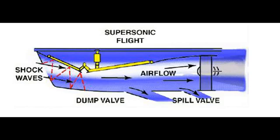The Concorde inlets shown in the figure provide a good illustration of how complicated an inlet may have to be to take full advantage of energy recovery. At the speed of sound, half the pressure needed by the engine for combustion may be provided by ram effect and the other half by compression through the engine. At twice the speed of sound, pressure ratios in the vicinity of 30:1 are possible, and at three times the speed of sound this may rise to 50:1.